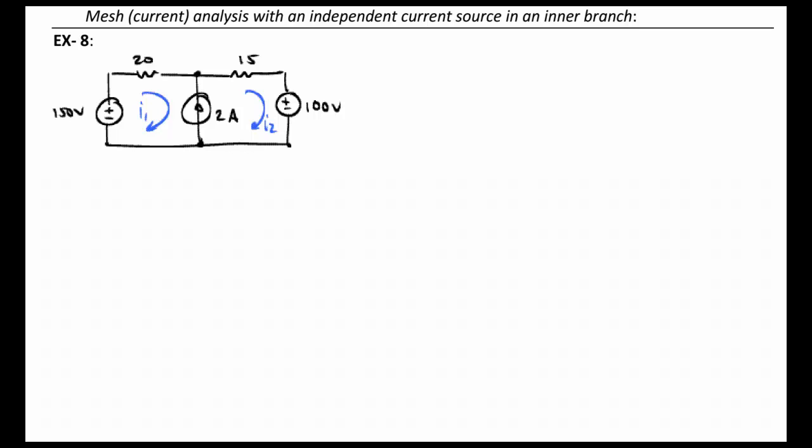If we try to walk around the mesh 1 loop, let's say we'll start in the bottom left corner here and start walking around. When we get to this current source right here, we're not going to be able to define the voltage across it. And yet we can't say that I1 is just equal to minus 2 amps. That would only be the case if that current source was on the outside like it was in the previous example.